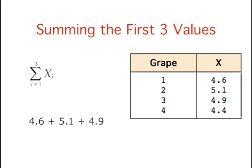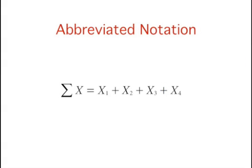This symbol means to sum only the first three values. The index variable i goes from 1 to 3. This symbol means to sum all the values of X. When no values of i are shown, it means to sum all the values. It is very convenient to use this abbreviated notation.